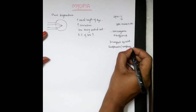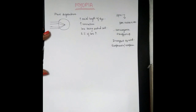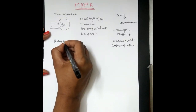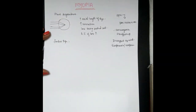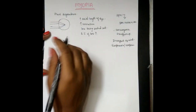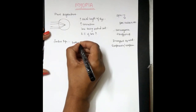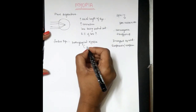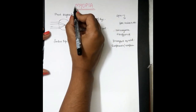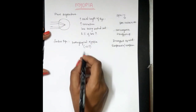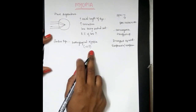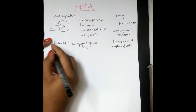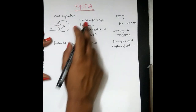Coming to the fundus findings — fundus signs are seen only in pathological myopia. Pathological myopia is myopia which is more than 6 diopters. Remember: myopia sign is always minus — M for myopia, M for minus. When there is pathological myopia, there will be fundus changes. The signs associated with the fundus in myopia are as follows.